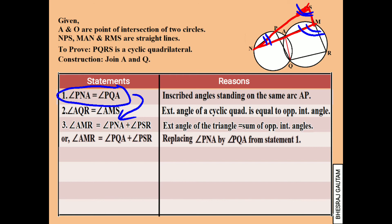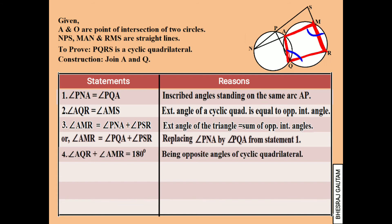Now replace angle AMR from statement 3 and write statement 5 as angle AQR plus angle PQA plus angle PSR is equal to 180 degrees.